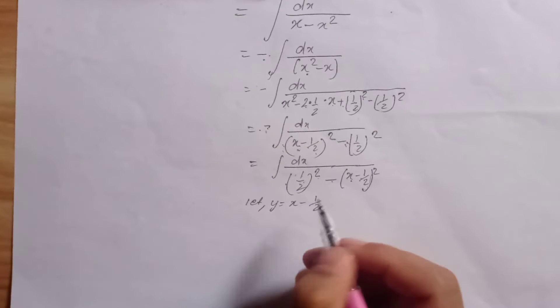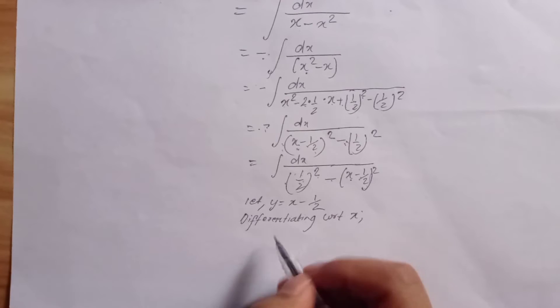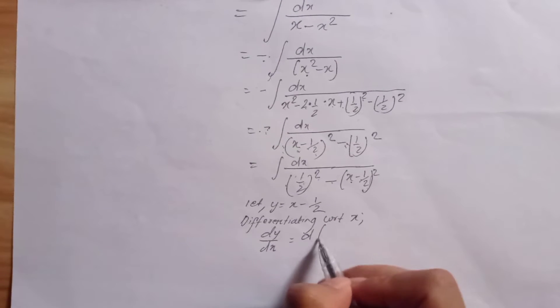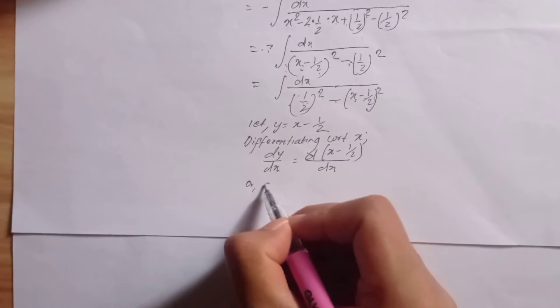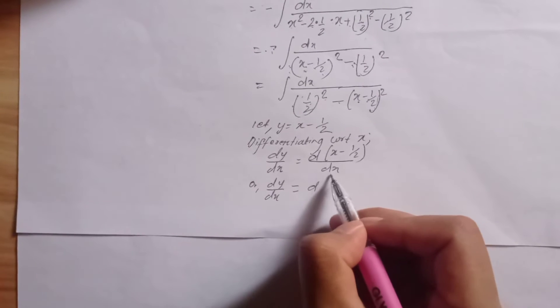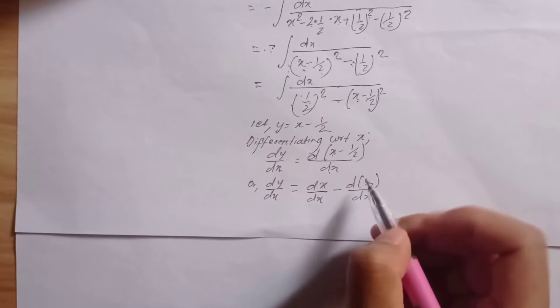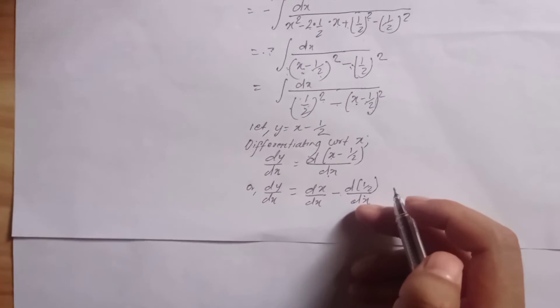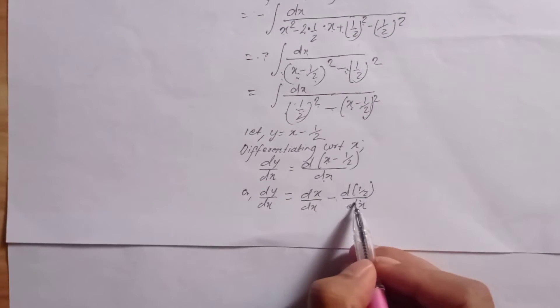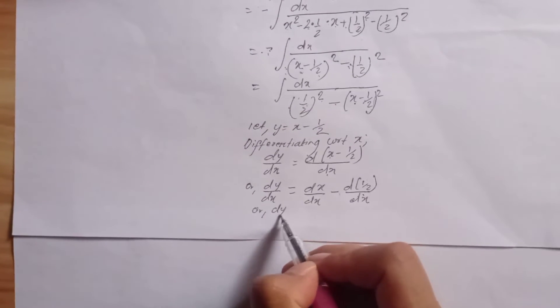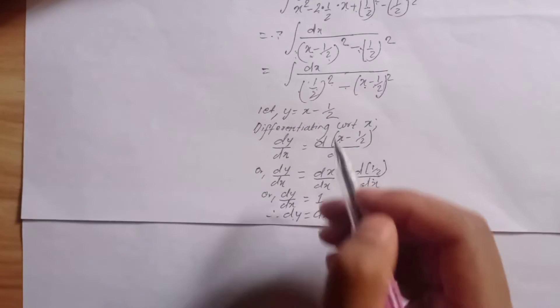Let y equal x minus 1 by 2. Differentiating with respect to x: dy by dx equals the derivative of x minus 1 by 2 with respect to x. The derivative of x is 1, and the derivative of 1 by 2 is 0 since it's constant. Therefore dy equals dx.